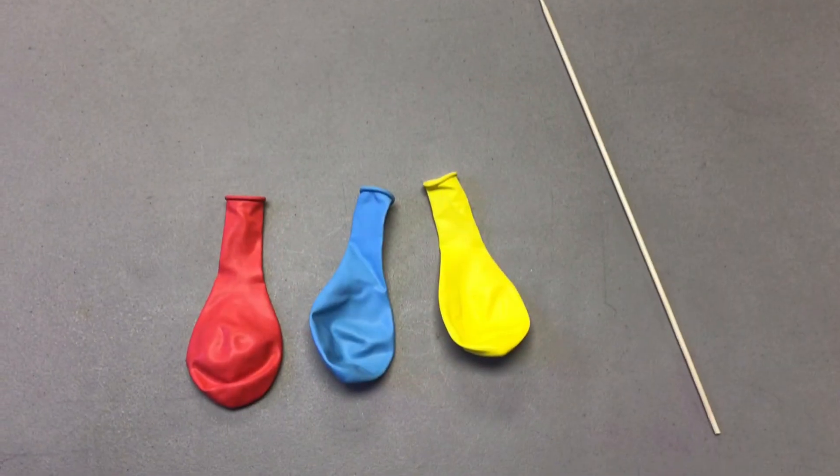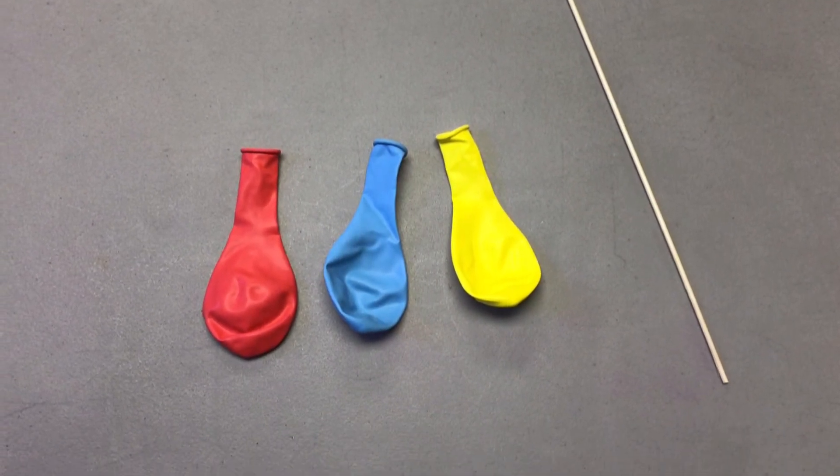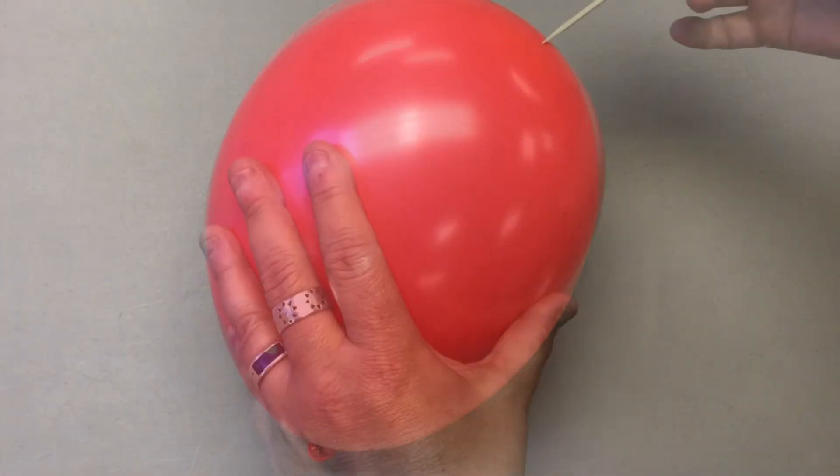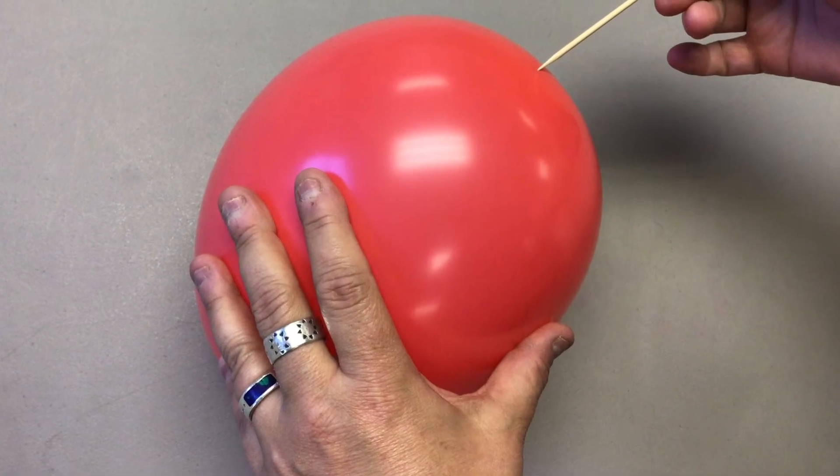For this, you'll need a couple of balloons and a wooden skewer. Take the balloon, blow it up about halfway and put a knot at the end. Then, take the skewer and see if you can put it through the balloon without the balloon popping.